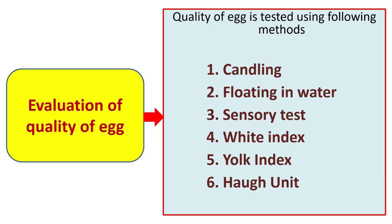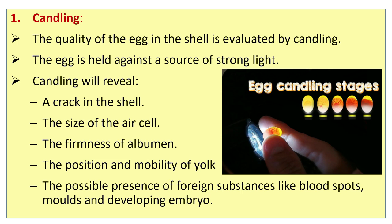Quality of egg is tested using the following methods: candling method, floating in water, sensory test, white index, yolk index, and Haugh unit. Egg candling stages can be seen in the picture on the right side. The quality of the egg in the shell is evaluated by candling.